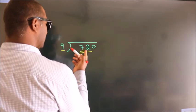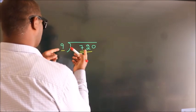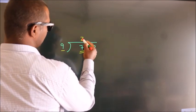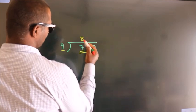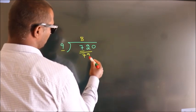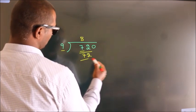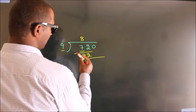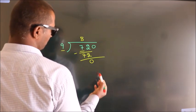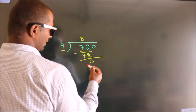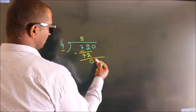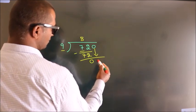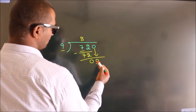When do we get 72? In the 9 times table, 9 eights are 72. Now we subtract, we get 0. After this, bring down the beside number — so 0 down, so 0.